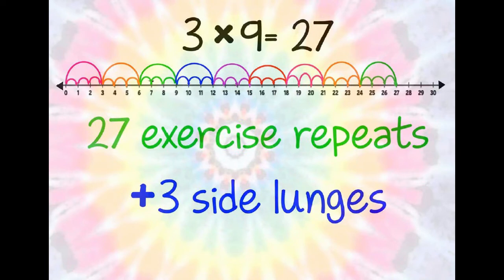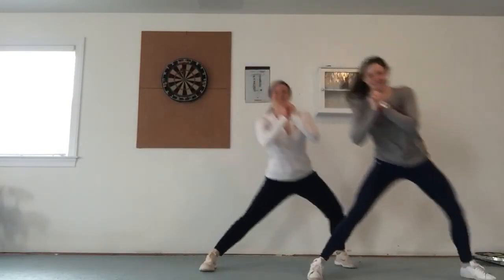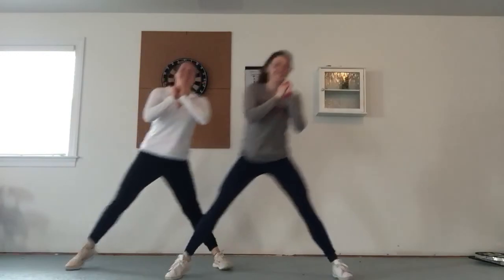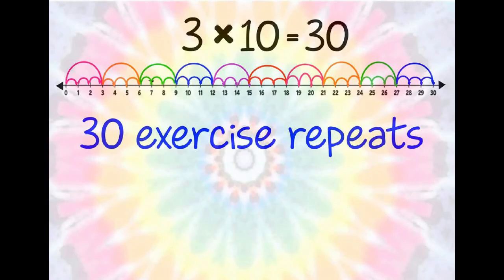Now we will add 3 side lunges. 3 times 10 is 30. We have completed 30 exercise repeats.